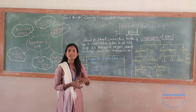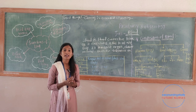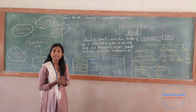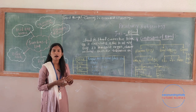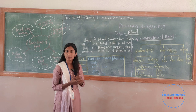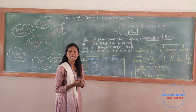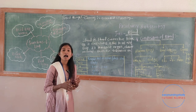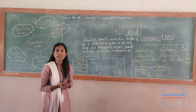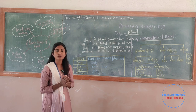So friends, today we learned superficially about blood. In the next lecture, we will discuss in detail about blood cells — RBC, WBC, platelets — and how blood is formed in the human body. Thank you.